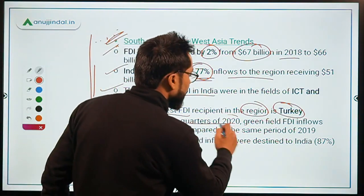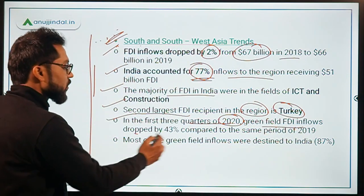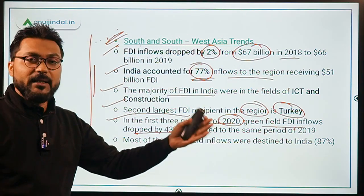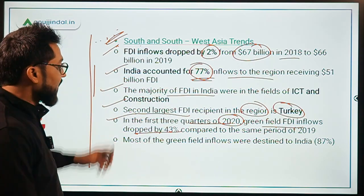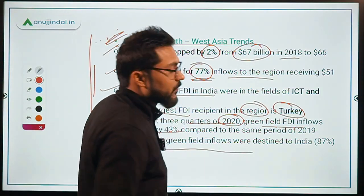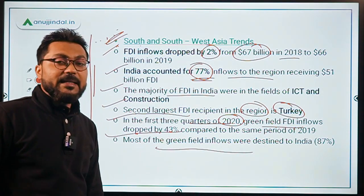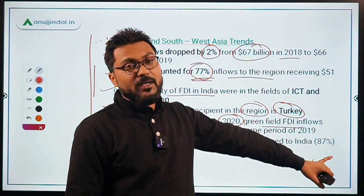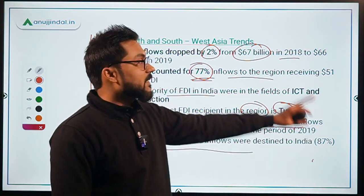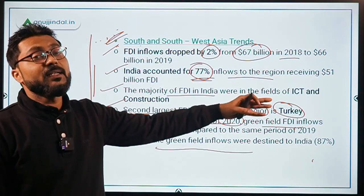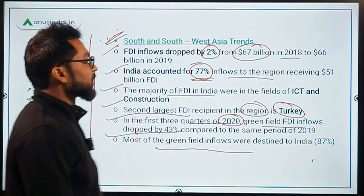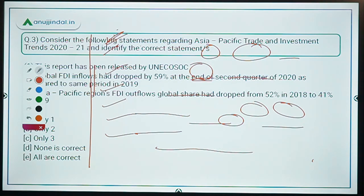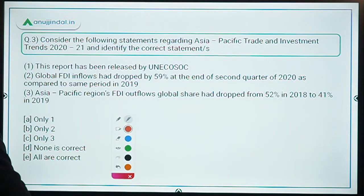In the first three quarters of 2020, greenfield FDI inflows in the South and South-West Asia region dropped by 43% compared to the same period in 2019. Most of the greenfield inflows were destined to India — at 87% of the regional total.